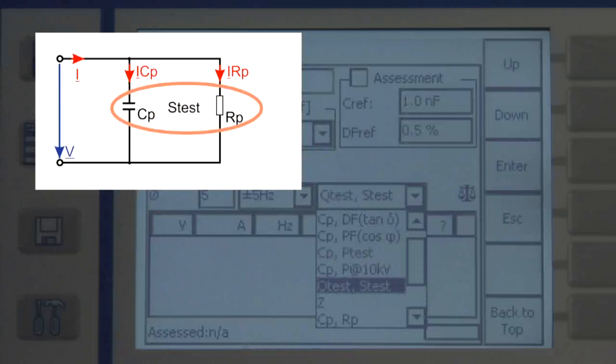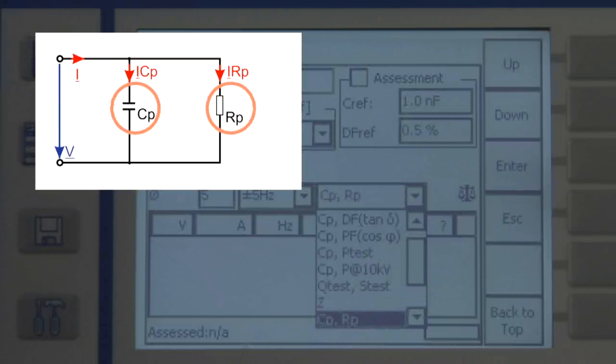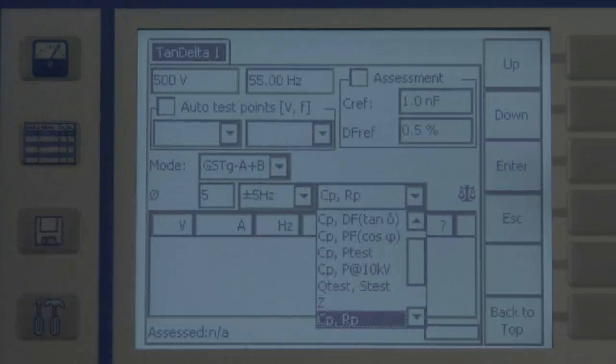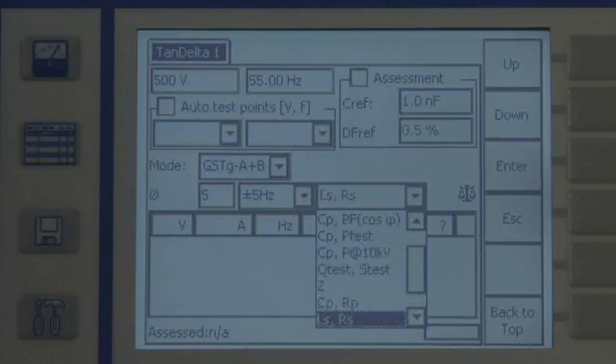as reactive power and cosine phi, as complex impedance, as CP and RP, or as LS and RS.